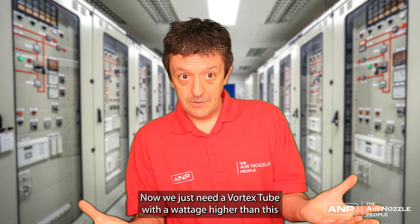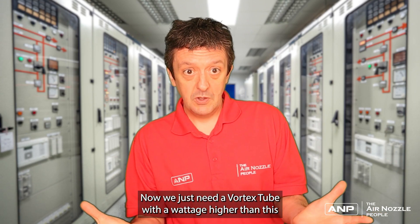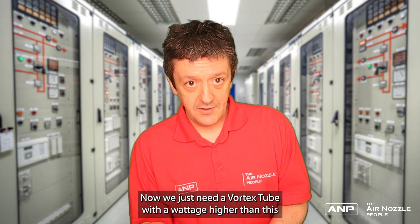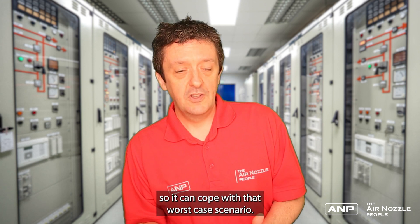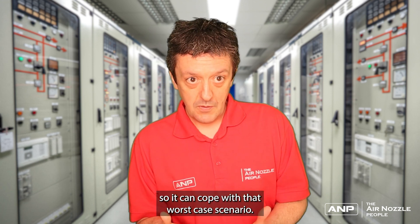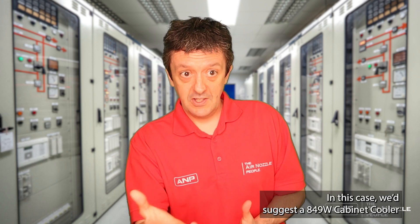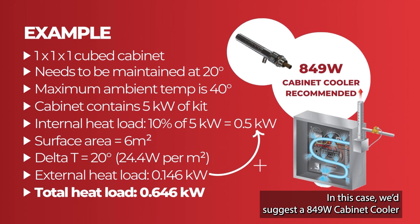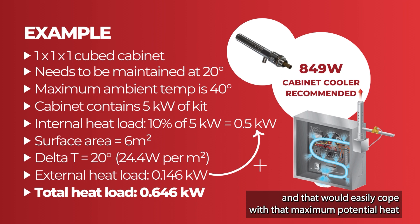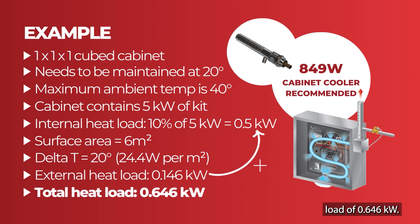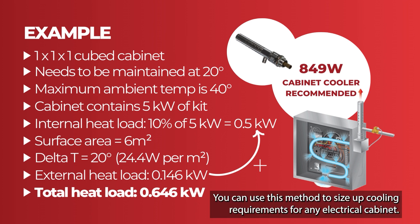Now we just need a vortex tube with a wattage higher than this total, so it can cope with that worst case scenario. In this case, we'd suggest an 849 watt cabinet cooler, and that would easily cope with the maximum potential heat load of 0.646 kilowatts.